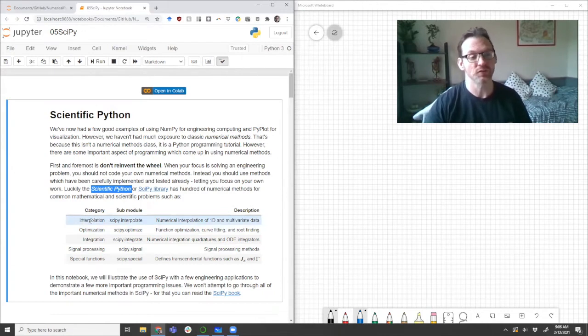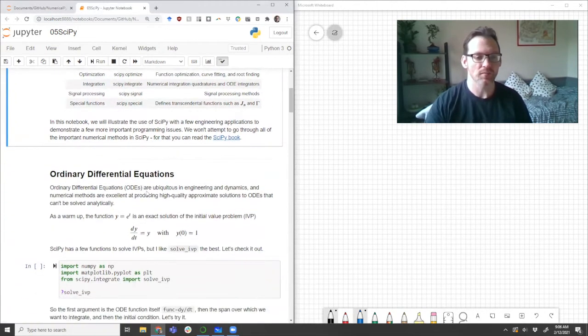So SciPy has functions for interpolation, optimization, integration, signal processing, special functions, and a bunch of other things that I haven't mentioned here. For a complete list, you can look at this SciPy book link or just go to the SciPy library itself. But all we're going to do in these videos is look at a couple of key examples.